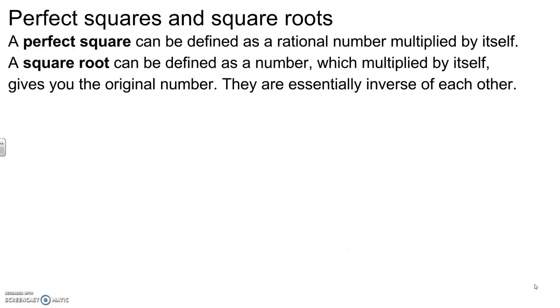Perfect squares and square roots. A perfect square can be defined as a rational number multiplied by itself. Remember a rational number is any number that can be expressed as a fraction, a terminating decimal, or repeating decimal.